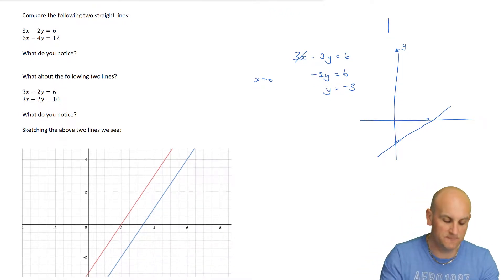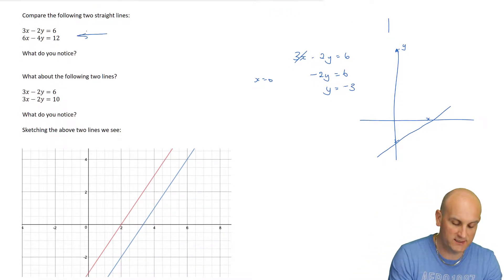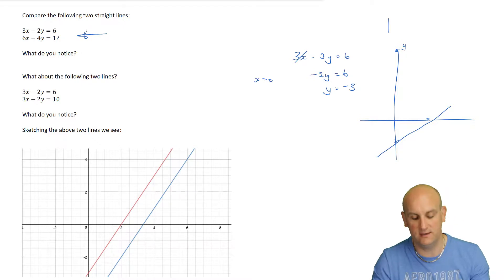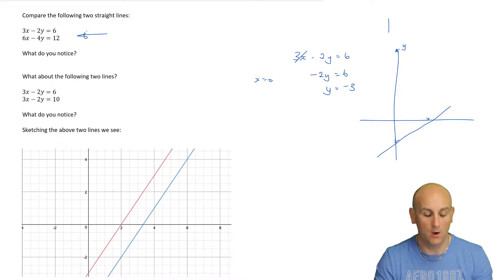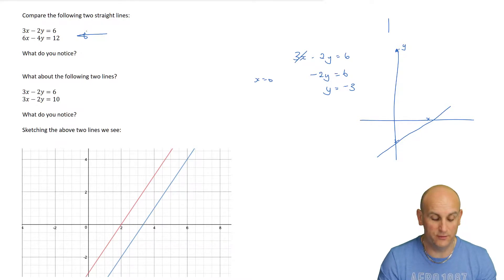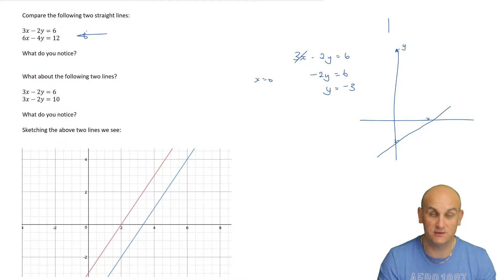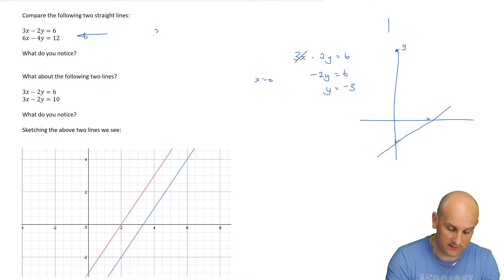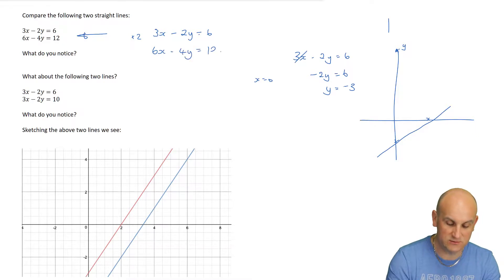But I want you to look at these two equations and tell me what you notice. Hopefully you'll notice I've done nothing more than double the top equation to get the bottom equation. If I take 3x minus 2y equals 6 and double it, I get 6x minus 4y equals 12.